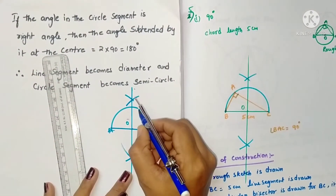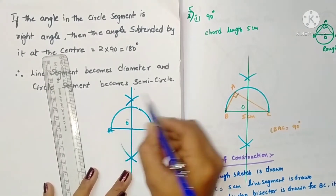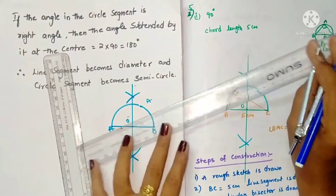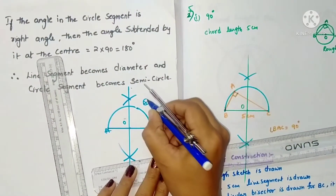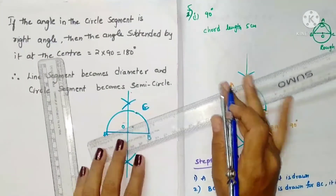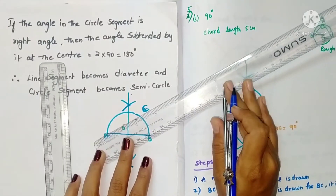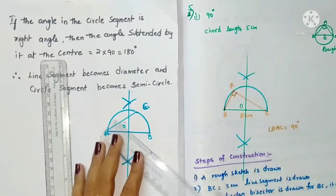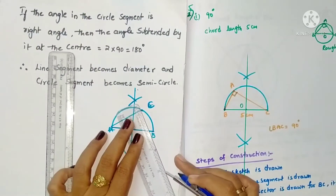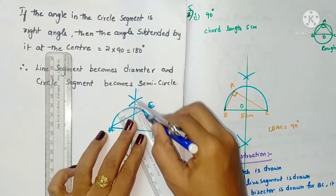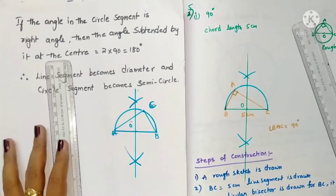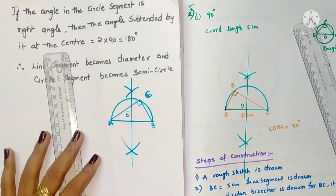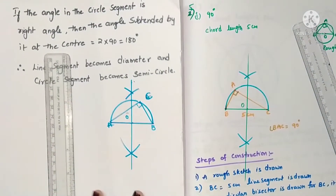This forms a semicircle. Take any point on this semicircle — let it be C. Join AC and BC. This angle is a right angle. So this is how you draw the figure confirming that a 90° angle in a circle segment corresponds to a semicircle.